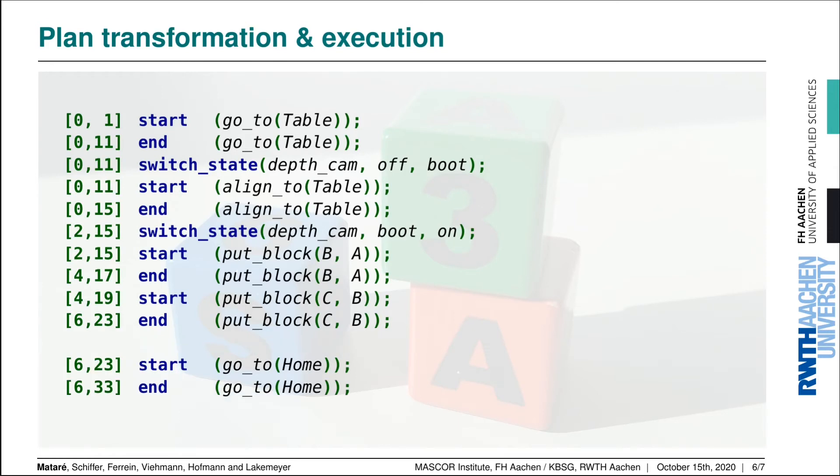Then there's another important point towards the end where we want to start with a go_to action. Of course at this point the transformation will have to switch the camera back off so we can safely execute the go_to action.